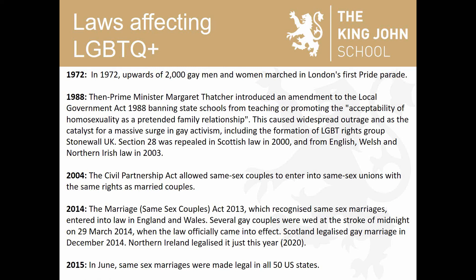This is what we now know as the New York City Pride March. Over 2 million people were estimated to have been there in 2019. After these marches began, in 1972, 2,000 gay men and women marched in London's first Pride Parade, which seemed like real steps forward. Then in 1988, Margaret Thatcher introduced an amendment — Section 28 — that actually banned schools from teaching or promoting 'the acceptability of homosexuality as a pretended family relationship.'